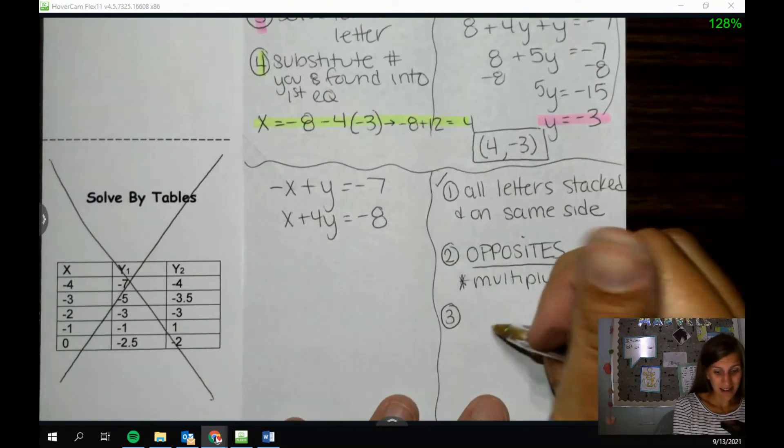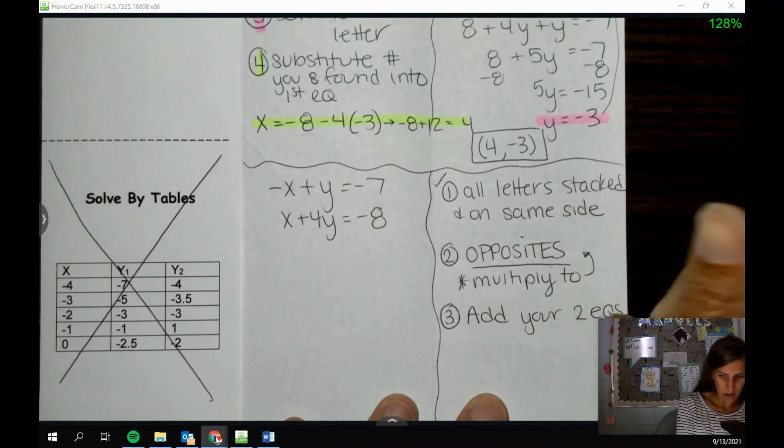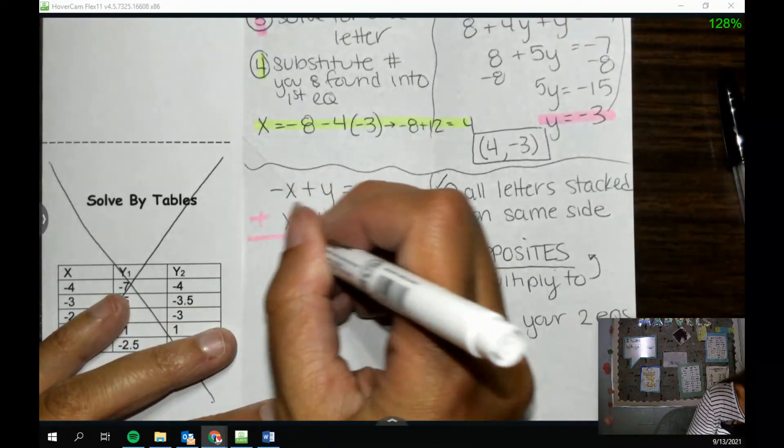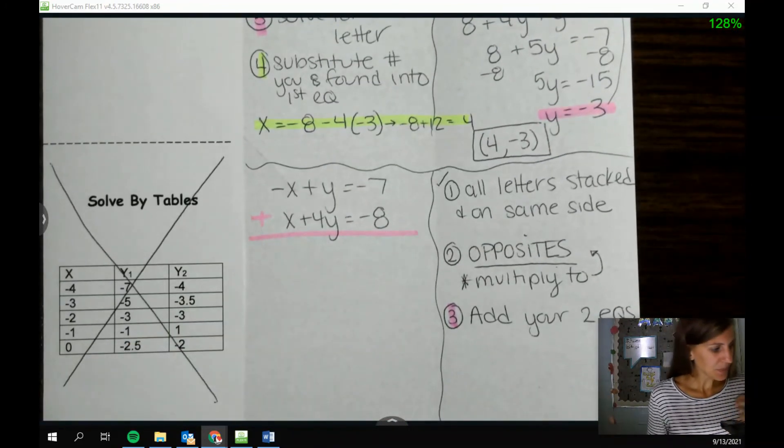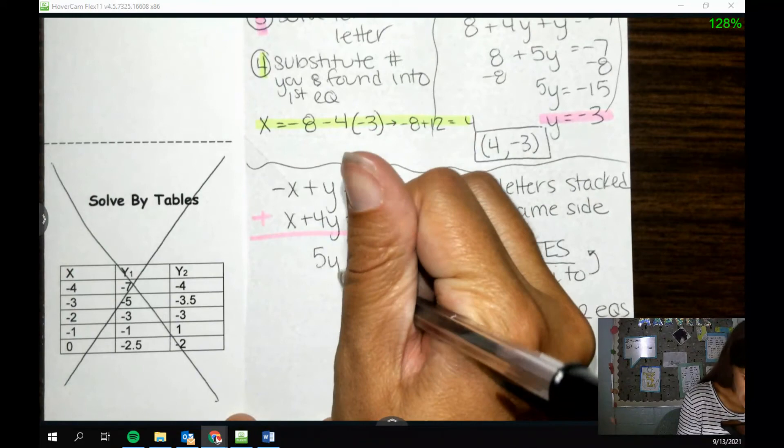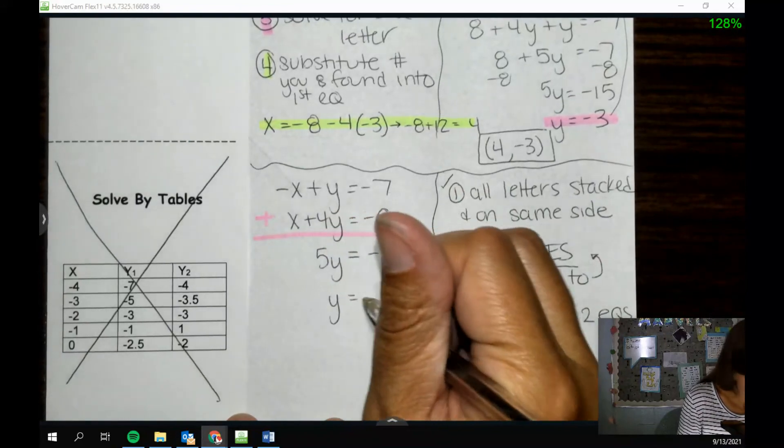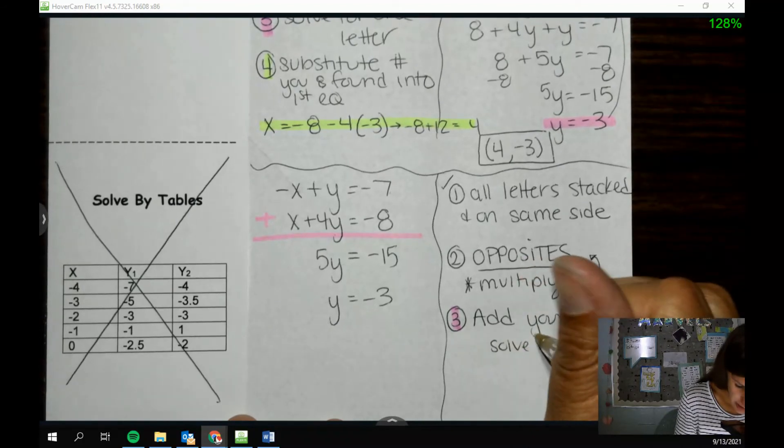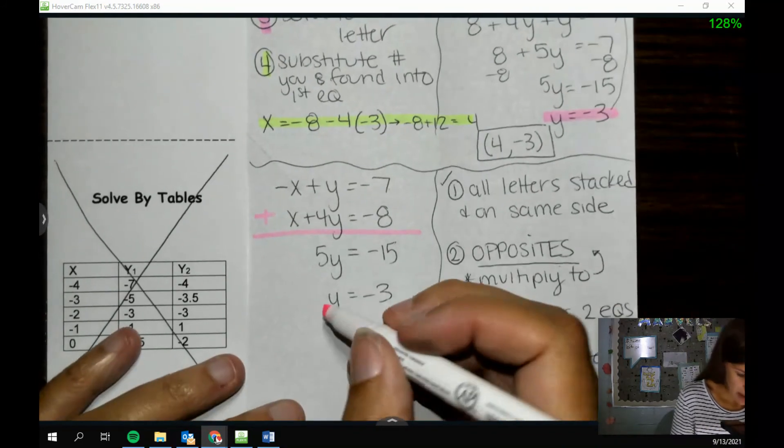Third thing, we're going to finally actually do something now. Add your two equations. So let's do this. Let's add it up. I add these two equations together, like straight up old school addition plus big bar. Negative x, positive x is zero. 1y plus 4y is 5y. Bring down my equal sign. Negative 7, negative 8 is negative 15. And then I solve for y and y is negative 3. So add your two equations. Solve for a letter. We kind of did both those things, which is all well and good.